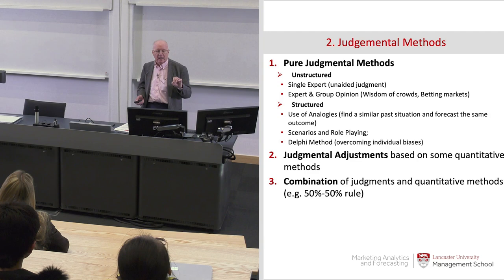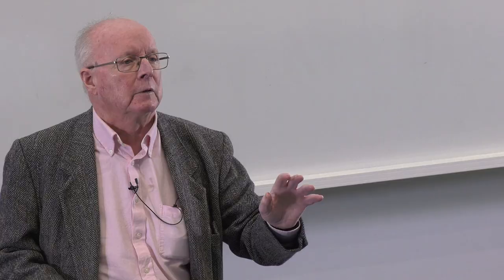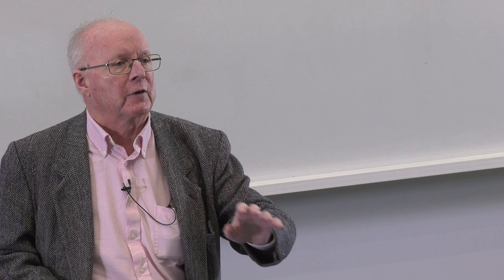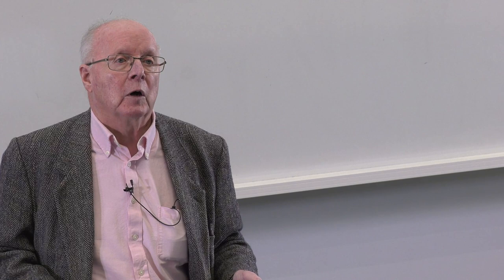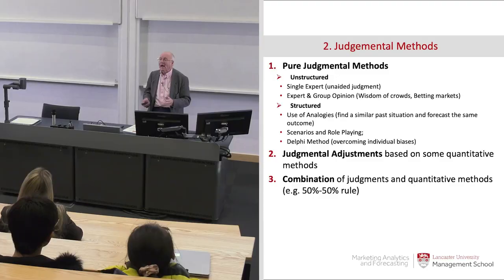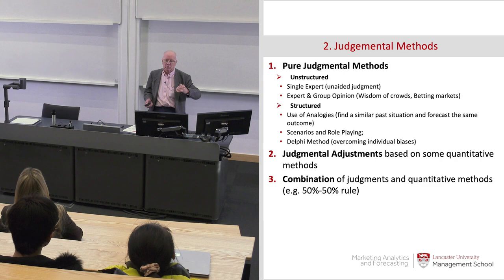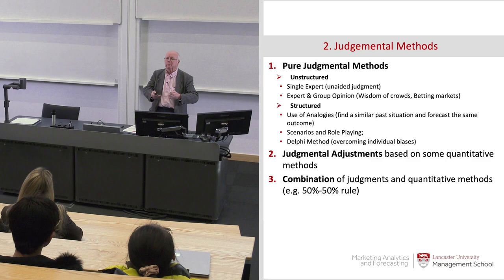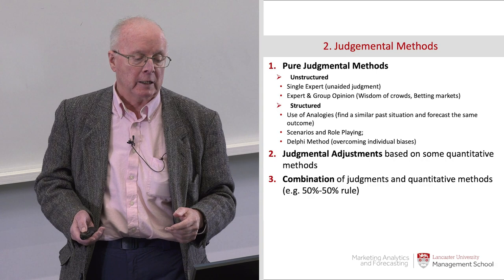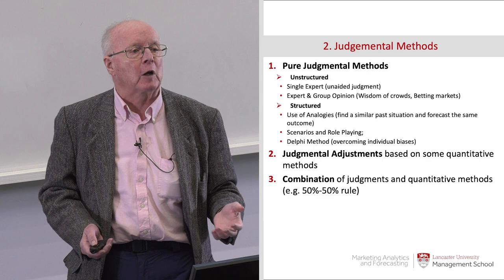So what about the judgmental methods? The simplest is the unstructured, where essentially a single expert — or often a non-expert to be honest — makes a statement about the future. Think of the politicians you know; they're forever predicting the future. A single expert, unaided by any modelling or formality. We may also have a group of experts, a group opinion, which is a very common organisational approach to forecasting. There are also structured approaches which require you to decompose and look at components of the problem, to try and overcome some of the deficiencies of using a group of experts. Judgmental adjustment based on some quantitative method — combining the two — and just a 50-50 combination form the third class.